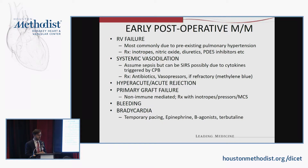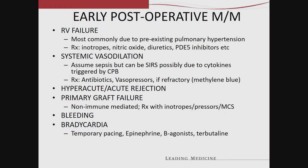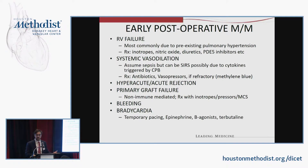Focusing on early post-operative morbidity and mortality: one major concern is RV failure. The predominant mechanism of early post-transplant RV failure is pre-existing pulmonary hypertension. This is why we focus on hemodynamics while patients are on the wait list. We want their transpulmonary gradient — mean PA minus wedge — ideally under 12 and certainly less than 15, and we look at pulmonary vascular resistance (transpulmonary gradient divided by cardiac output). If RV failure occurs, we support with inotropes, inhaled nitric oxide, diuretics, and sometimes PDE5 inhibitors.